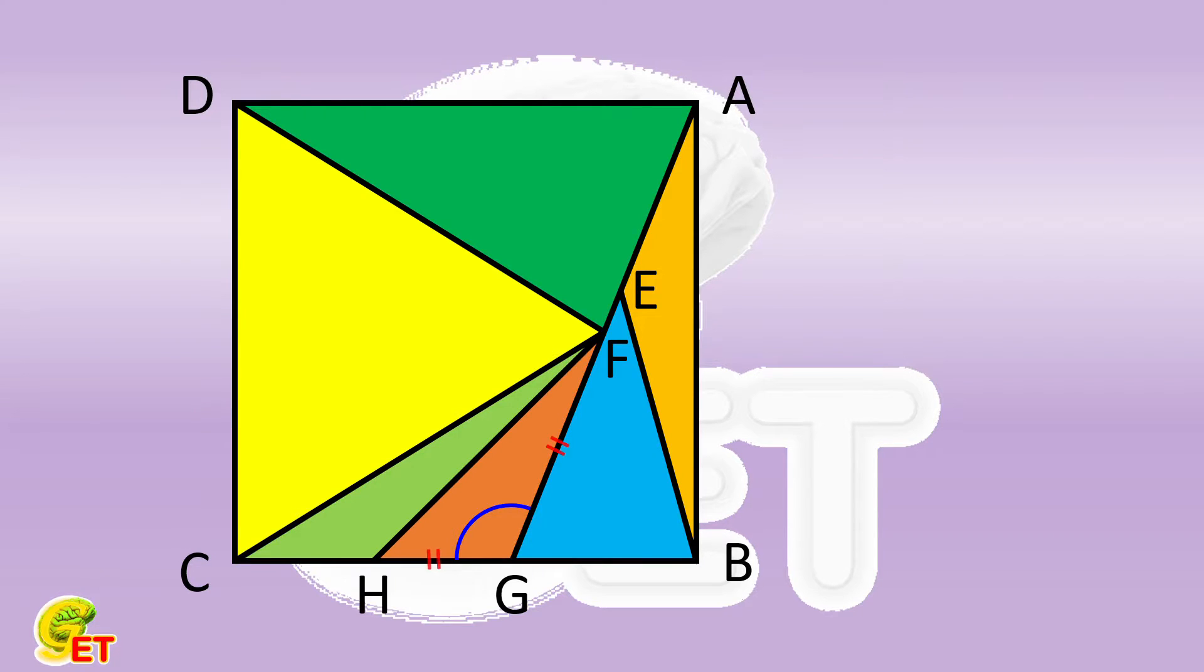FG and GH are the legs. For the same reason, the angle FHC is the vertex angle of this isosceles triangle. And FH and HC are the legs.